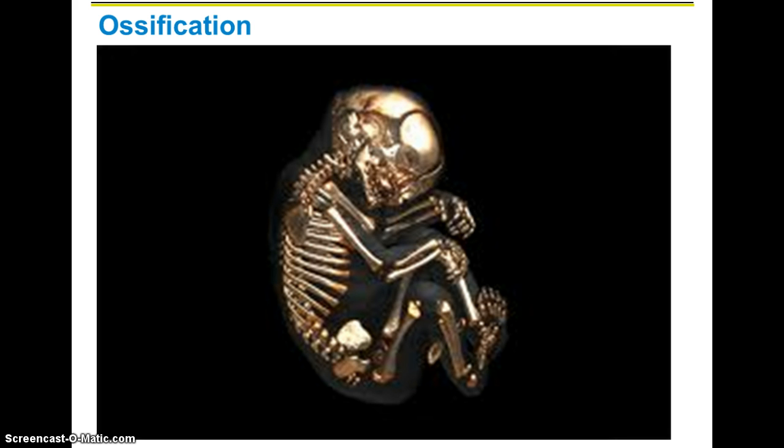Ossification is the process of making bones. This is going to occur at about 8 weeks of development of the embryo inside of the mother's uterus. It's going to be all from fibrous connective tissue and hyaline cartilage. There are two different types of ossification. The first one is intramembranous ossification, developed from a fibrous connective tissue membrane. All the cranial bones and flat bones are going to be formed this way, and also the clavicles, which is an exception.